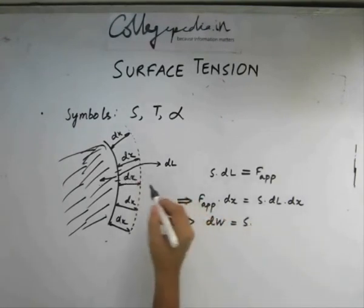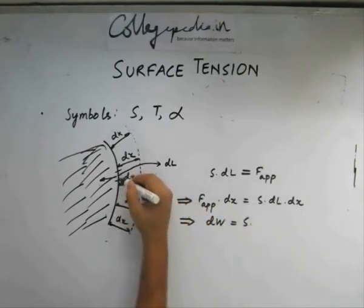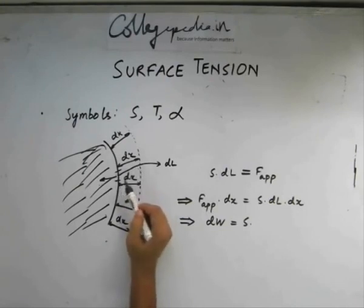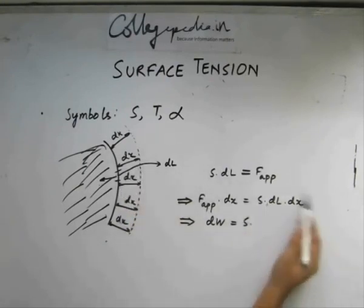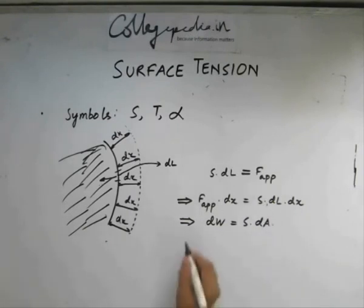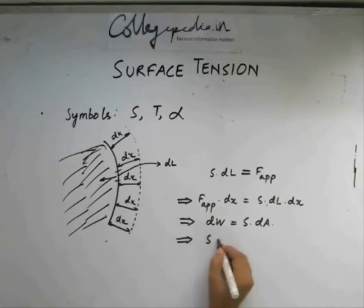dl into dx, if we consider this to be almost a straight line and this also to be almost a straight line, dl into dx will be a small rectangular piece of sides dl and dx. So this becomes the area of that rectangle. So what we get is s is equal to dw by dA.